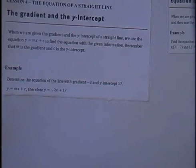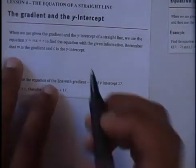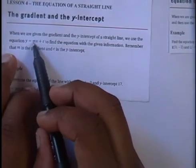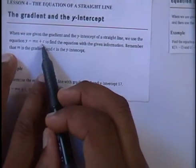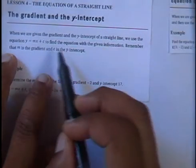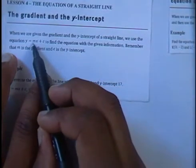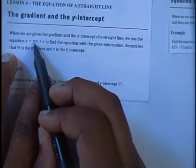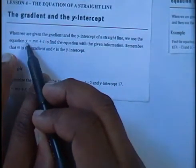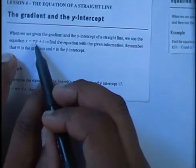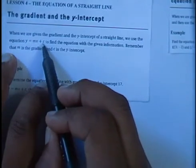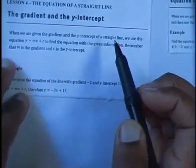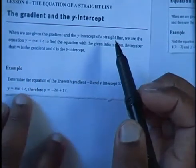What you must always remember is that every straight line is in the form y equals mx plus c. Remember, c is the y-intercept and m is your gradient. So whenever you have an equation like this, you know m is your gradient and c is your y-intercept.